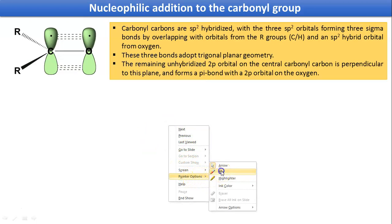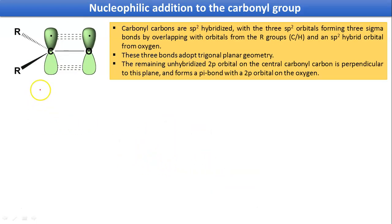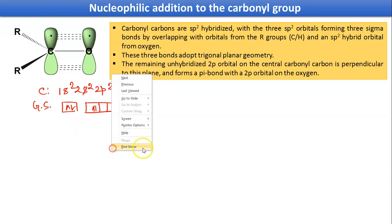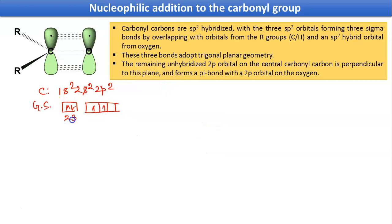For the orbital picture of carbonyl, we have to know first the electronic configuration of carbon and oxygen. The configuration is 1s2, 2s2, 2p2. So in the ground state, writing only the outermost electronic configuration, this is 2s and this is 2p. When it is in the excited state, one of the electrons from S will be transferred to P.